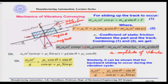From this equation, if we simplify, the condition becomes: A0·omega²/g must be greater than [μs·cos(θ) + sin(θ)] divided by [cos(ψ) + μs·sin(ψ)]. This is the condition for the part to slide up the track. Similarly, if you resolve the components when the part is going down the track, you will find a very similar condition — only with a minus sign — which is the condition for the part to move down the track.